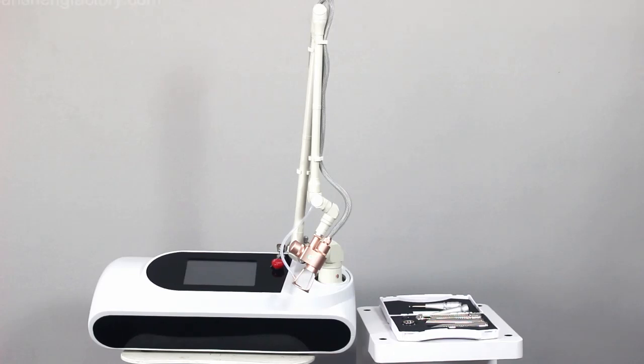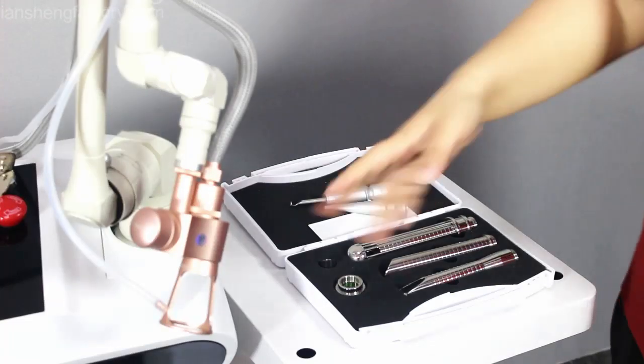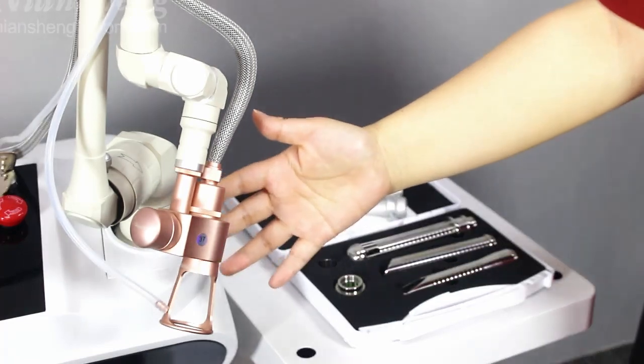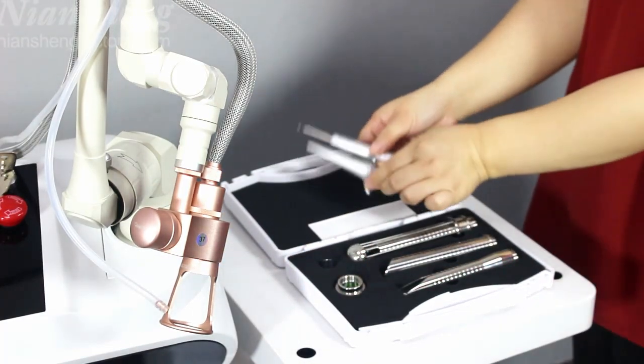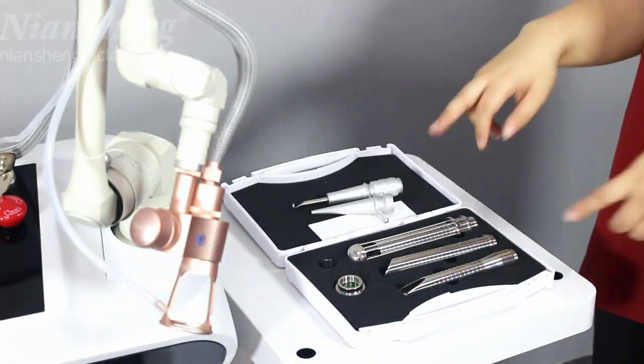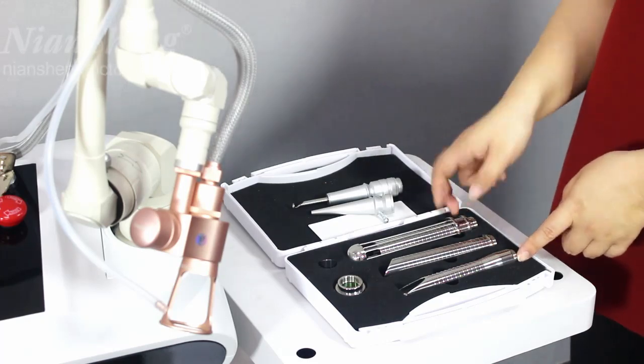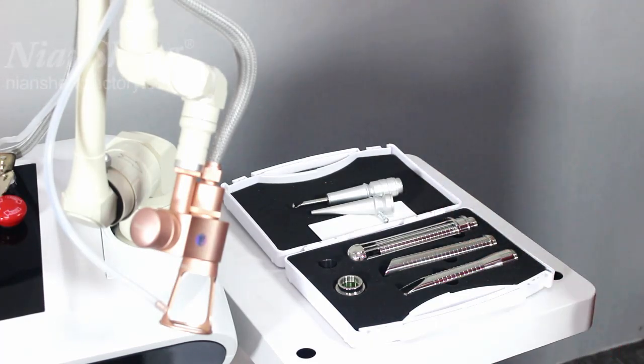Today I will introduce the fractional CO2 laser machine. This machine has three parts and this one is the fractional. And this one is two parts for cutting. And the last one is the vaginal. We will try one by one.